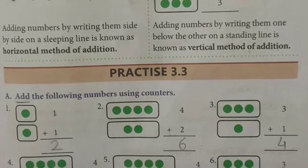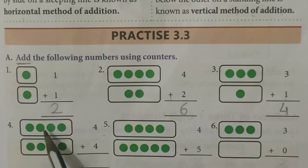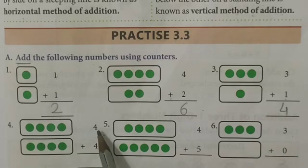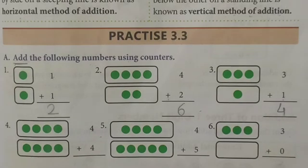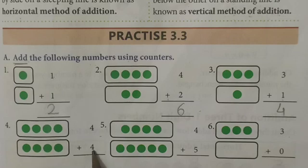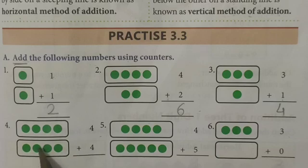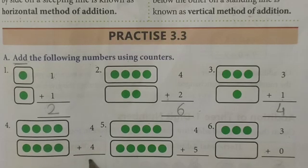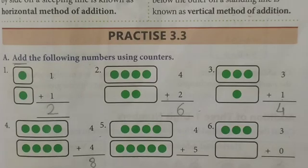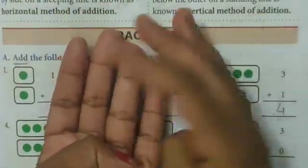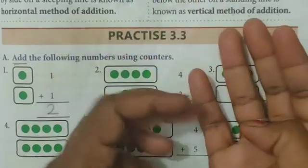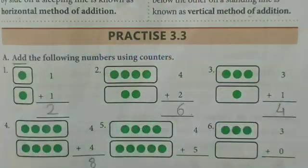Next example: four dots plus four dots — that means four plus four. Count all: one, two, three, four, five, six, seven, eight. Answer will be eight. You can also use your fingers for counting: four plus four — count one through eight. Answer will be eight.